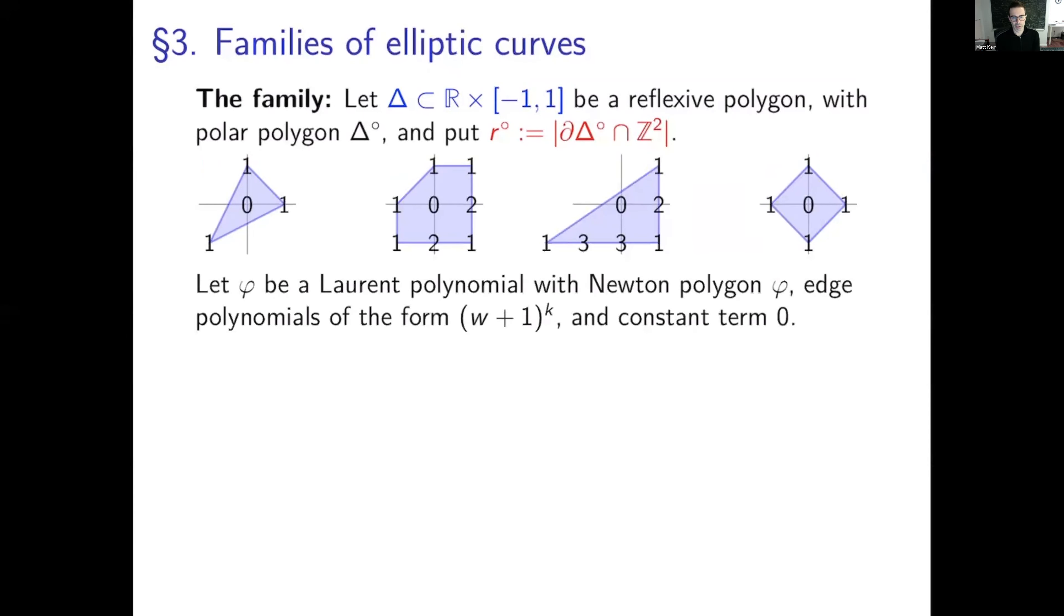And I put r circle to be just the number of integer points on the boundary of delta circle. So this is going to have meaning when you have the canonical maximal unimodular point at t equals zero. This will be the number of components that Neron minimal model has. Okay. Now let phi be a Laurent polynomial with Newton polygon phi and edge polynomials all of the form w plus one to the k. Can you hear me? All right. I just can't help it. Don't you mean 16? I mean 15 because the one that does, that gives P2, the P2 polytope with vertices at 2, negative 1, negative 1, 2, and negative 1, negative 1. There's no way to fit this inside that strip.